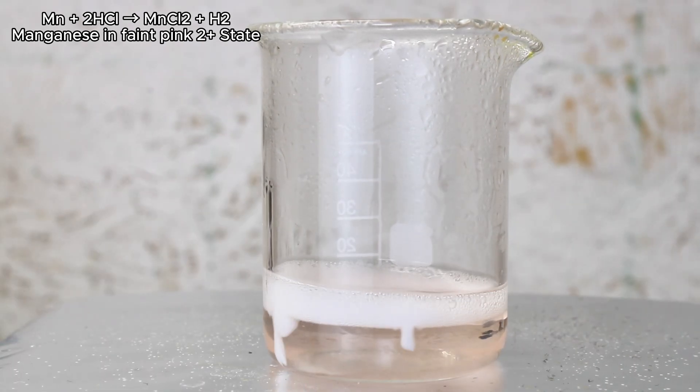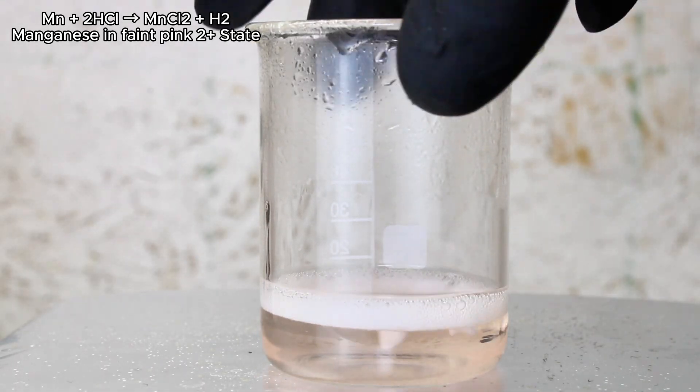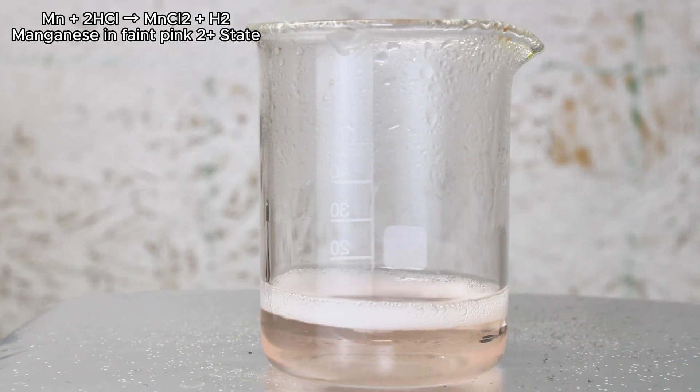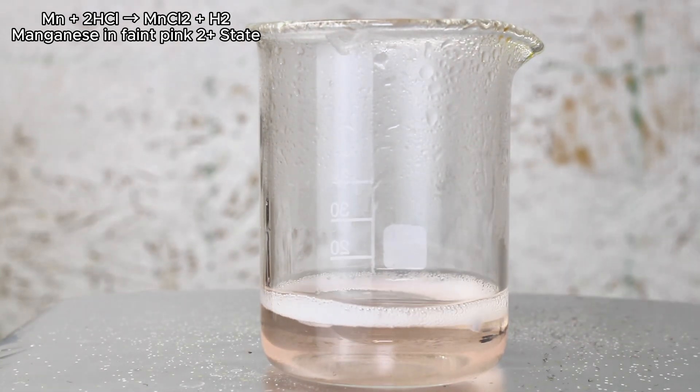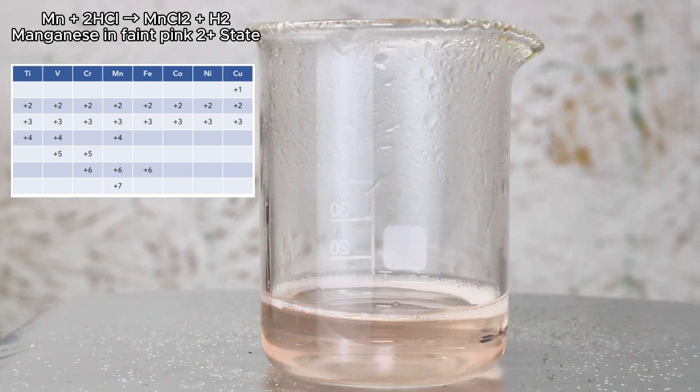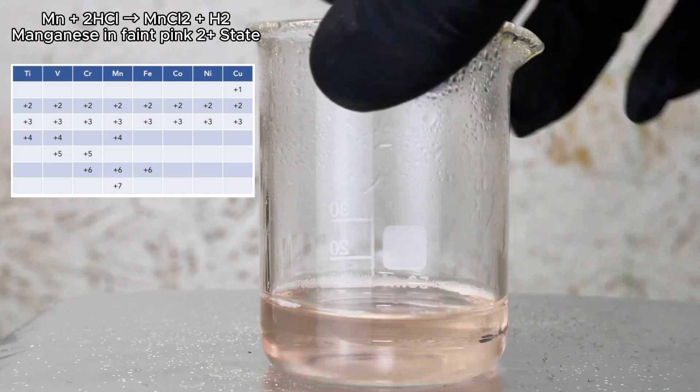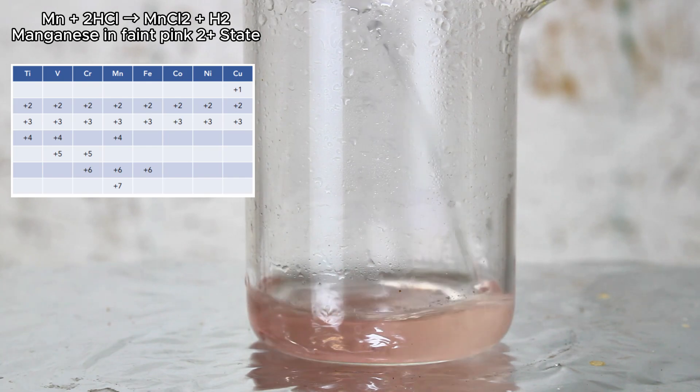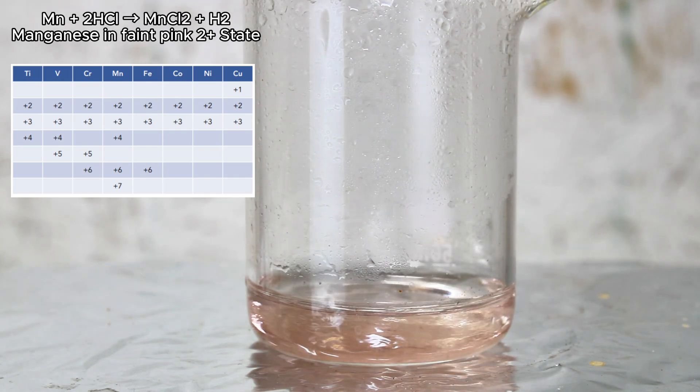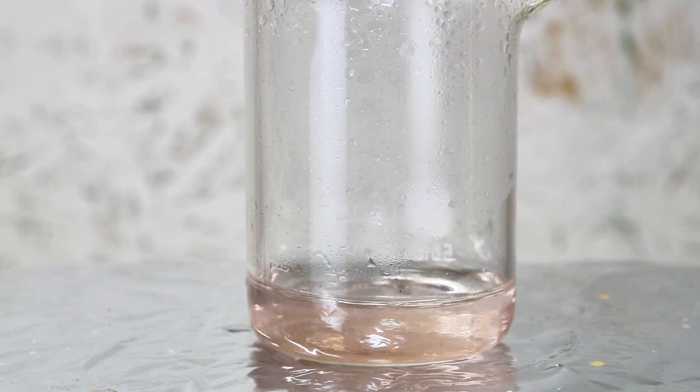Today I thought it would be fun to show you some of the different inorganic oxidation states of manganese I was able to make starting from elemental manganese. Manganese has more oxidation states than pretty much any other transition metal, and the first one I have here is manganese chloride, which is a faintly pink salt and represents manganese in its plus two state.